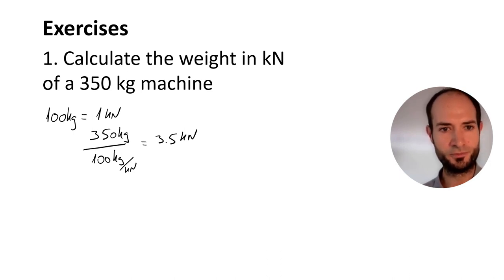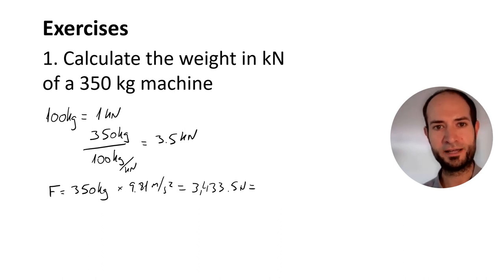Now with the equation. We have the mass and we know gravity. So, 350 kilograms times 9.81 meters per second squared equals 3,433.5 newtons. If we divide by 1000, we get kilonewtons, which is roughly 3.43 kilonewtons.